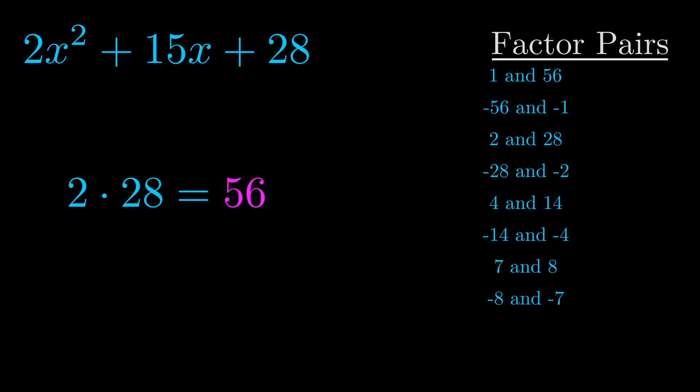The b value is the coefficient on the x term. That's the middle term, the one that we haven't done anything with yet. And really this is the only factor pair that we need.